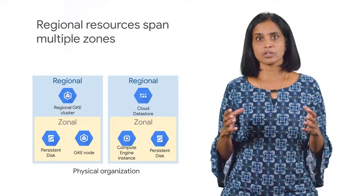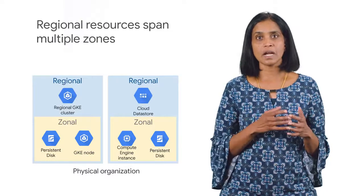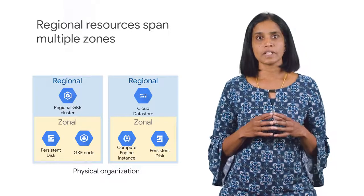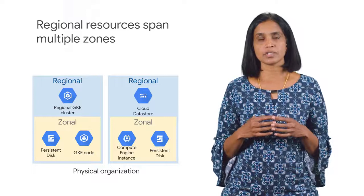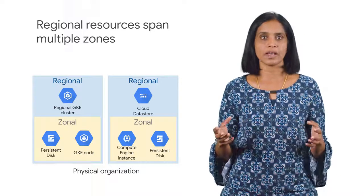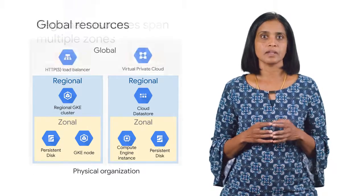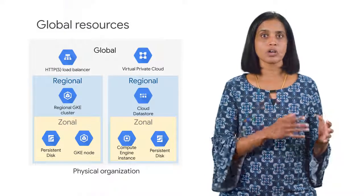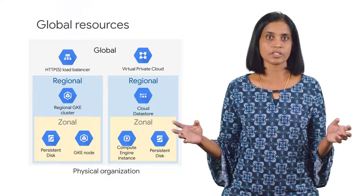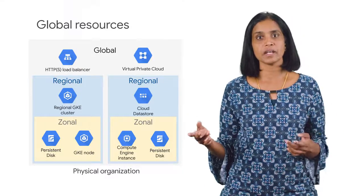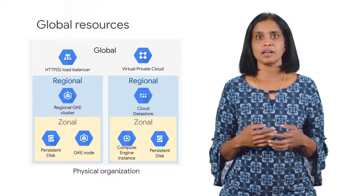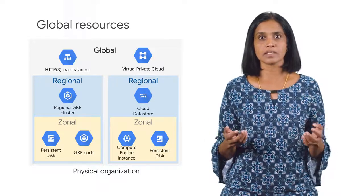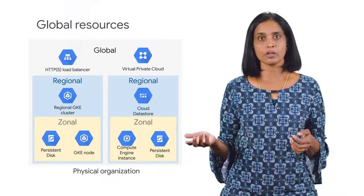Regional resources operate across multiple zones, but still within the same region. An application using these resources can be redundantly deployed to improve its availability. Finally, global resources can be managed across multiple regions. These resources can further improve the availability of an application. Some examples of such resources include HTTPS load balancers and virtual private cloud networks.